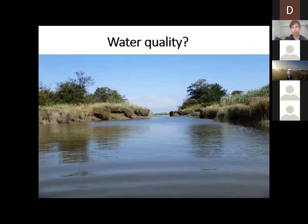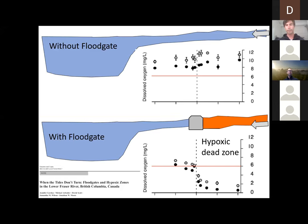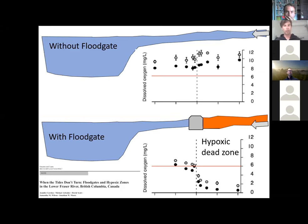We also wanted to look at water quality. My two assistants looked at sites with and without floodgates and measured dissolved oxygen concentrations during the day and night. Generally what we found is that upstream of the floodgates we have this hypoxic zone that continues for at least 100 meters. Getting into July and August, the floodgates are impounding water and causing dissolved oxygen concentrations to become very low — below safe minimum standards for fish. So we know these gates are closed a lot of the time and they're creating a hypoxic zone for fish.